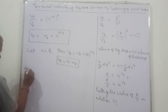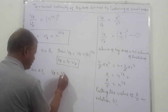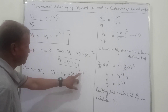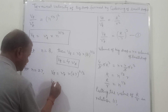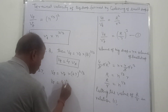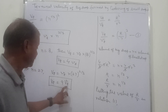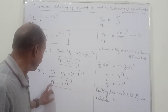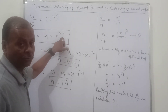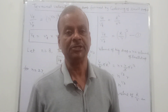Similarly, for N equal to 27: VT equals Vt times 27^(2/3). The cube root of 27 is 3, and 3 squared is 9. So VT equals 9 times Vt. So 27 small drops each with terminal velocity Vt coalesce to form a big drop with terminal velocity 9 times that of the small drop.